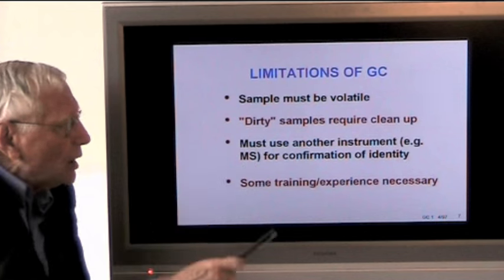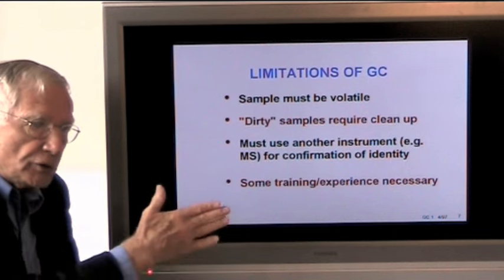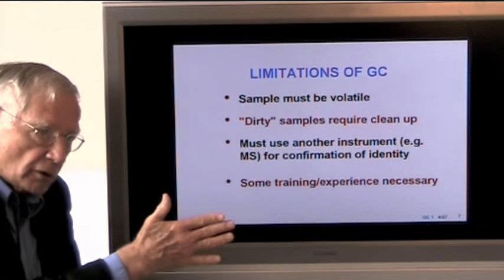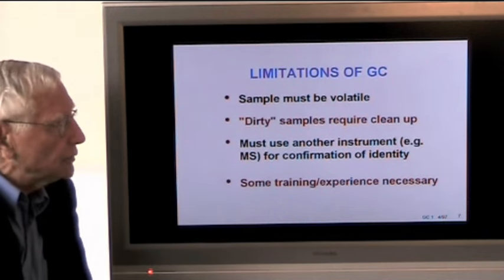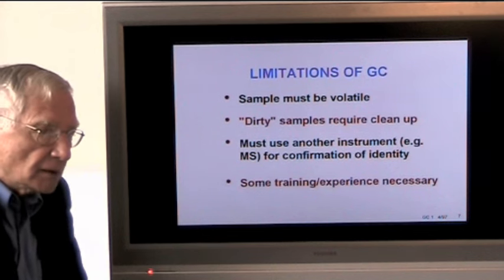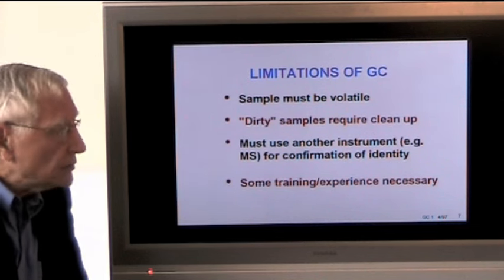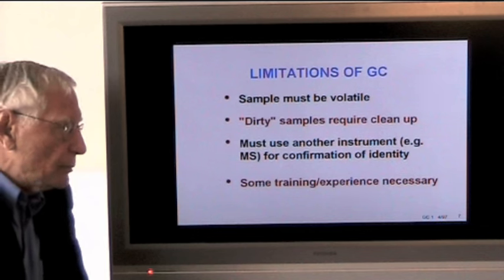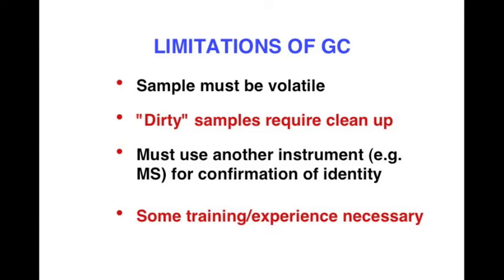Another limitation is we must use another instrument, for example, a mass spectrometer for confirmation. Typically, we use that retention time described earlier, the retention time of standards and unknowns to decide what the peak can be. But legally, at least in the United States, retention times are not considered a confirmation. A mass spectrometer is needed for confirmation if necessary. And finally, of course, some training, some experience is necessary in order to obtain good results.